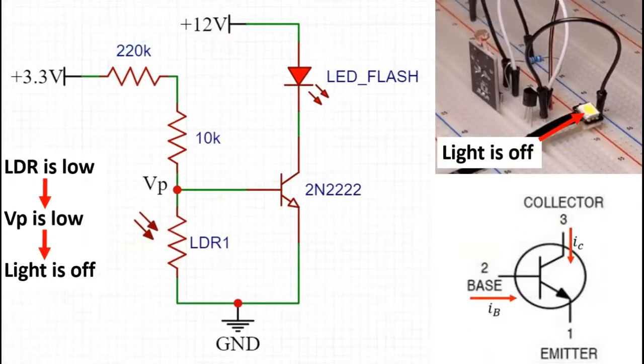So here's the circuit again and here you can see in this scenario we have the light off. Here we have for reference the base, emitter, and collector of the transistor. So the light is off means the LDR resistance is low, and that is because the light is off. This drives the voltage at VP to be low, which means the flash will be off.